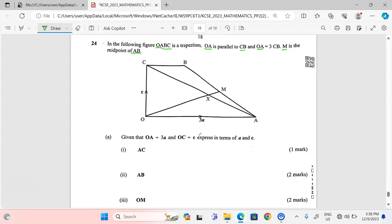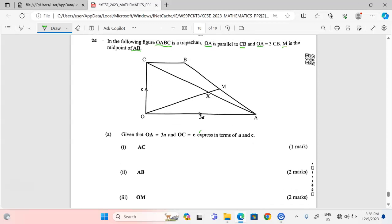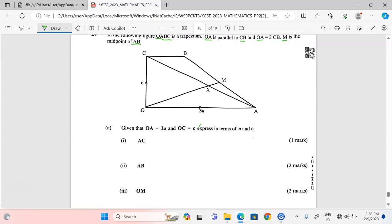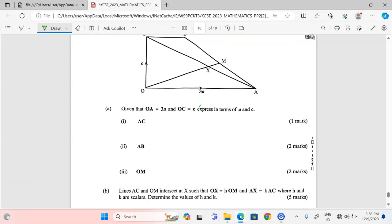The diagram is there, you can see it. Given that vector OA equals 3a as indicated, and that vector OC equals c, express in terms of a and c: (i) vector AC.